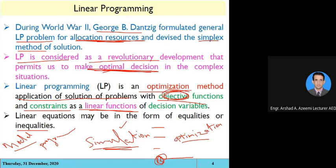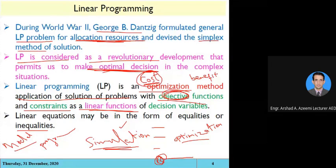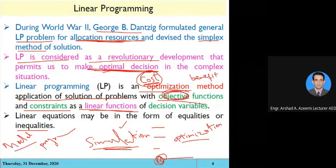There are two scenarios. If there are serious expenses that we want to reduce — for example, if it is a public project — we have discussed that in a public project we are not interested in profits. We are interested to maximize the benefits. In linear programming, whenever we are doing optimization, either we will be minimizing the objective or we will be maximizing the objective.